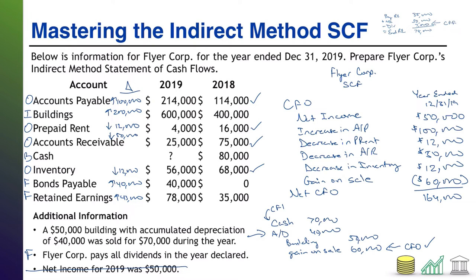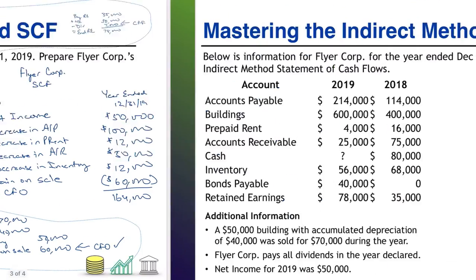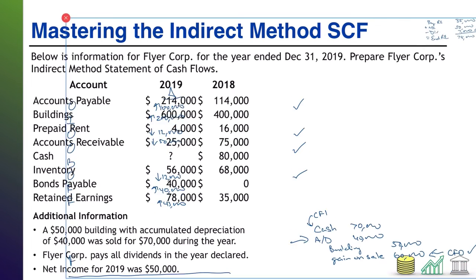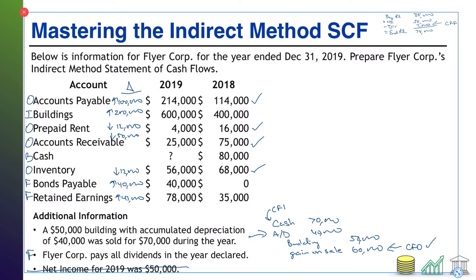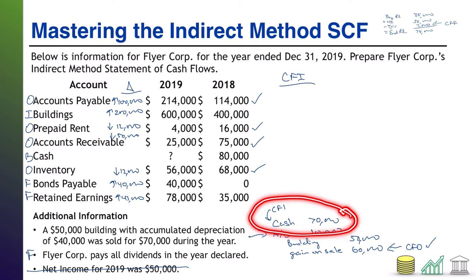Now I'll copy our notations to the next section and give us more room to work where we'll finish off the other sections of the statement. The next section after CFO is CFI. Going down the list to identify investing items: we have the increase in buildings marked 'I', and down at the bottom we have the cash coming in from selling buildings, also 'I'.